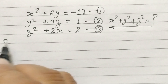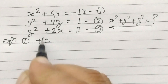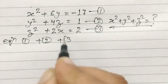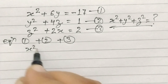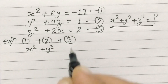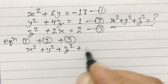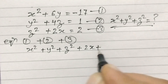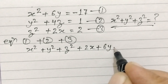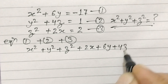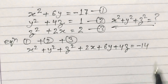If we add equation first, second, and third, we get x squared plus y squared plus z squared plus 2x plus 6y plus 4z is equal to minus 14.